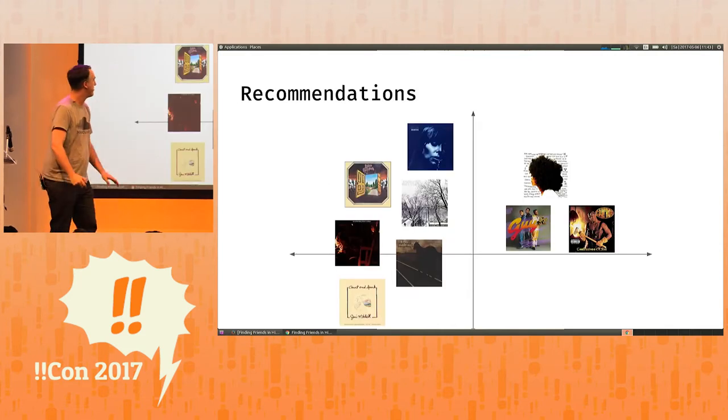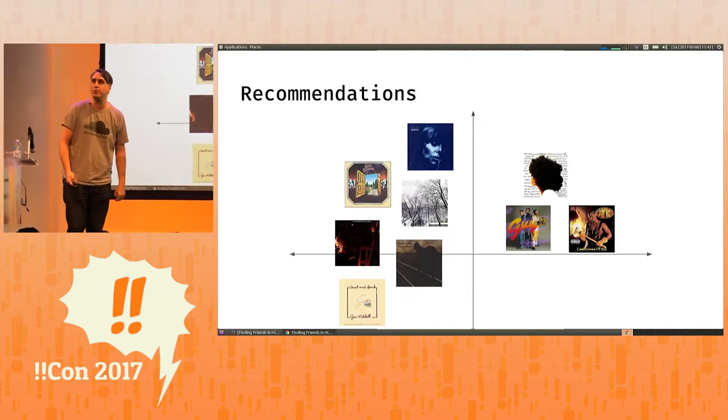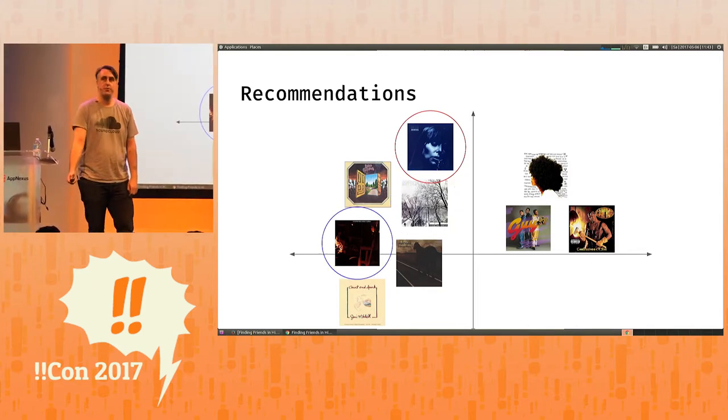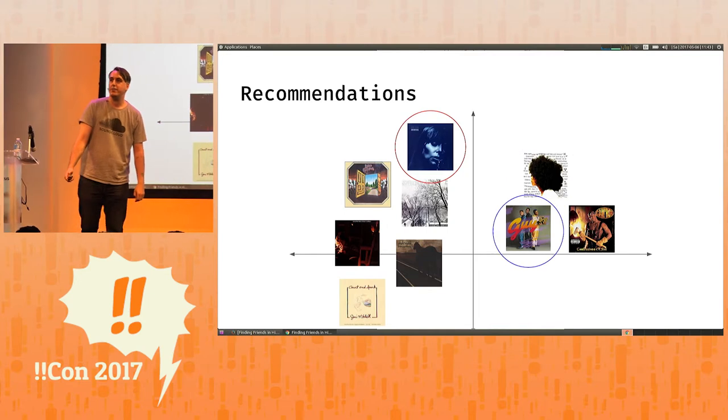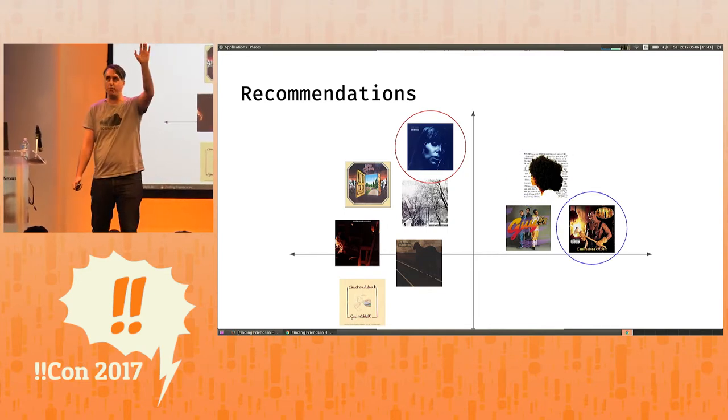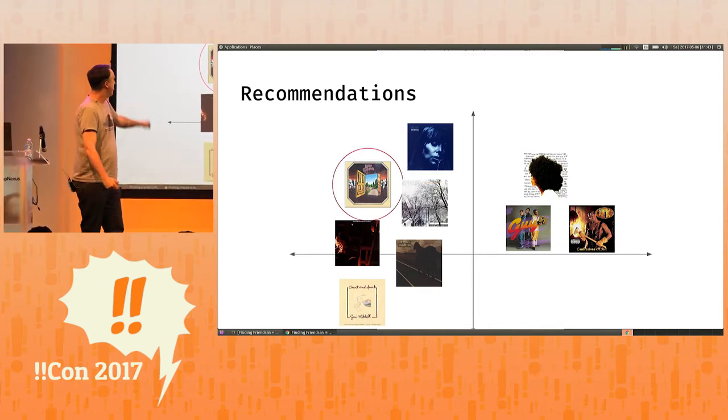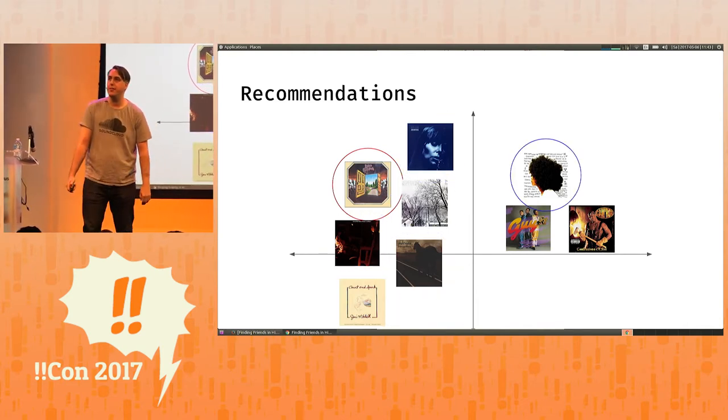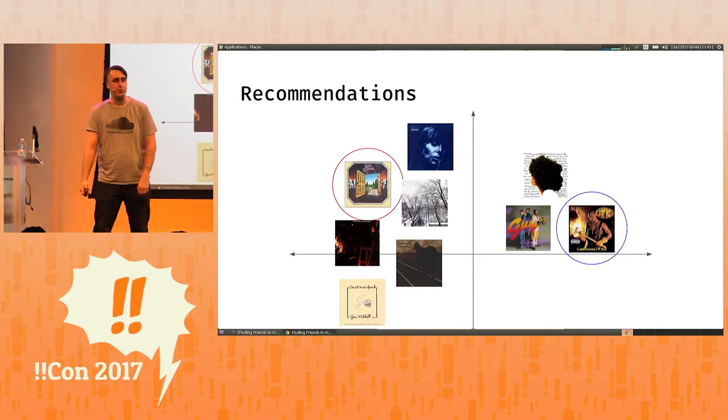For example, here is a two-dimensional track vector space with some of my favorite albums. If we want to build recommendations for Joni Mitchell, we will just compare it in either length or cosine angle to all the other tracks in the catalog and pick the five top ones. If you want to then produce it for Bruce Coburn's self-titled album from 1970, you have to compare it to all the other tracks in the catalog and pick the five best ones.